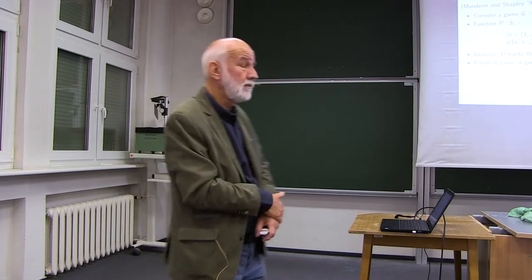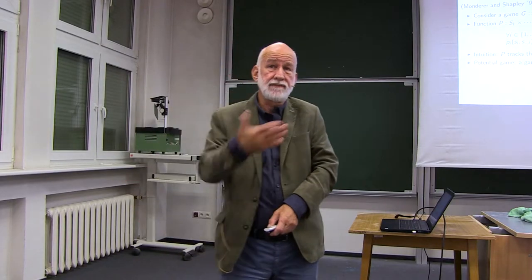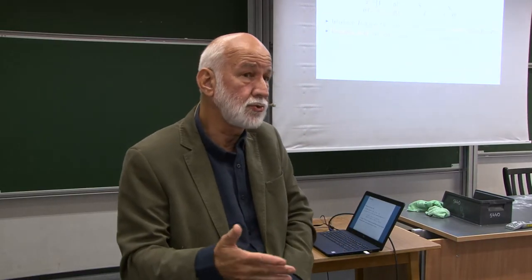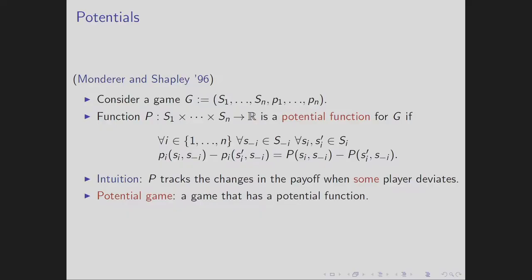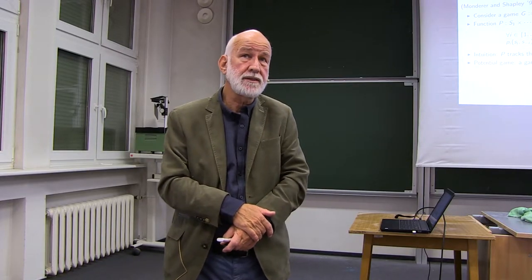Now we can ask how to characterize games for which this procedure makes sense and always finds the Nash Equilibrium. We let any player who is not satisfied choose a new best strategy — a best reply. Monderer and Shapley introduced a concept of a potential: a single function also defined on the Cartesian product. The difference from a payoff function is that a potential is not associated with a specific player.